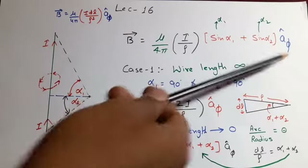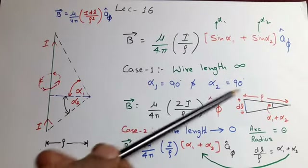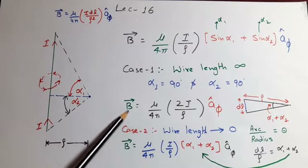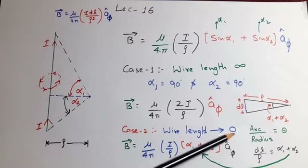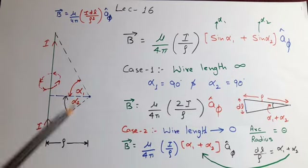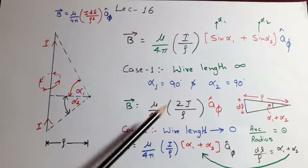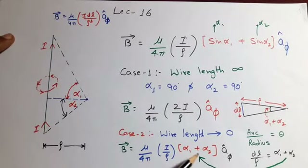Now the first case arises if the wire length is infinite. In that case alpha 1 and alpha 2 both tend to 90 degrees. And sin 90 plus sin 90 means 1 plus 1 equals 2, so B becomes mu upon 4 pi into 2i upon rho. We can take one more limiting case where the length of wire tends to 0. In that case this becomes a small current element, and alpha 1 and alpha 2 both tend to 0. So sin alpha 1 tends to alpha 1 and sin alpha 2 tends to alpha 2, giving B equal to mu upon 4 pi into i upon rho into alpha 1 plus alpha 2.